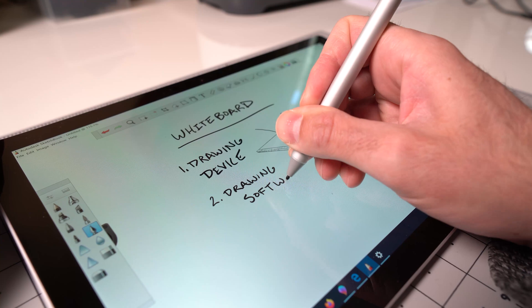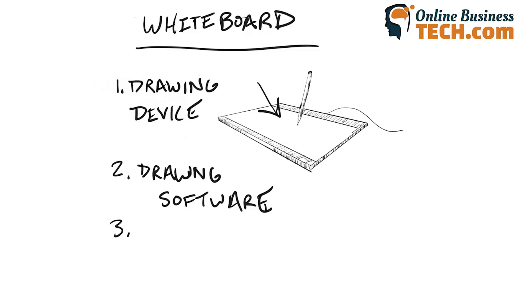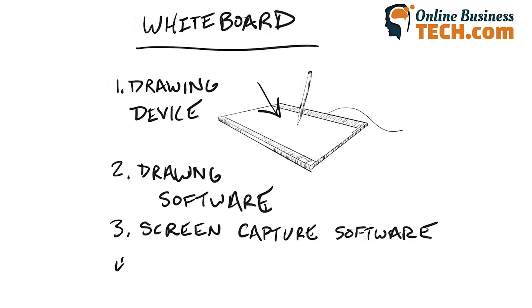The second thing you need is some sort of software to draw on — drawing software. You can either use software that's included in your operating system or there are some free programs I'll tell you about as well. The third thing you need is screen capture software — something that can record your screen while you're drawing on it. Once you've done that, you can use the fourth thing, which is your video editing software.